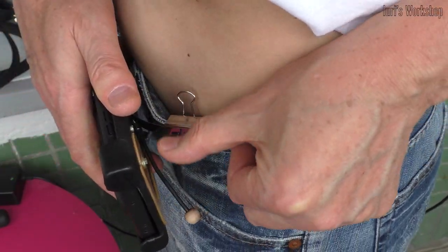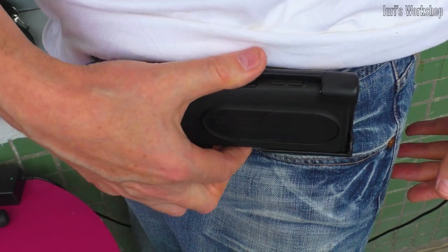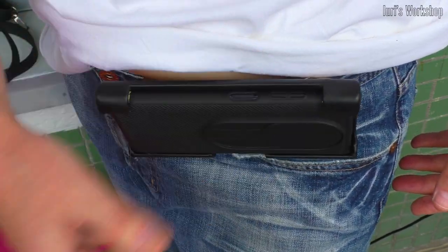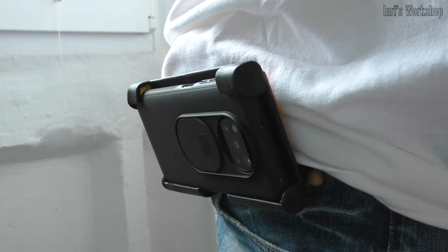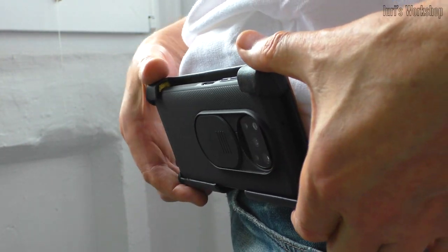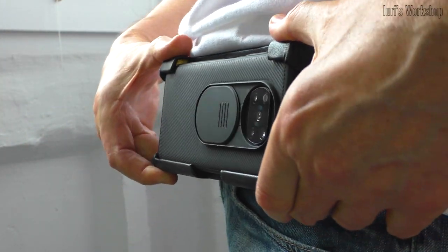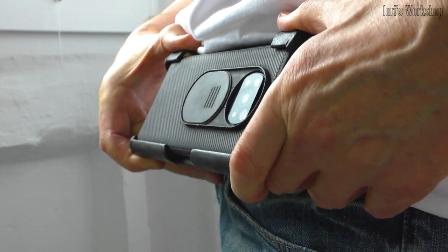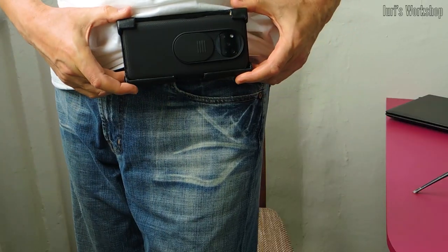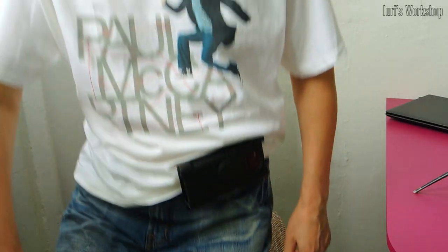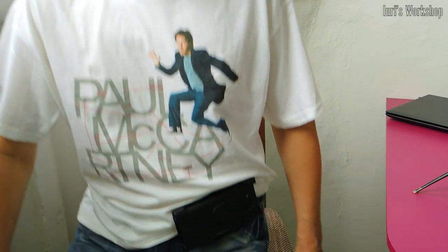The gadget is securely attached to trousers or a belt and provides instant access to the phone with one hand. You can also shoot video from waist level and adjust the tilt of the camera lens vertically. And the position of the camera does not change when you sit down or get up from a chair.